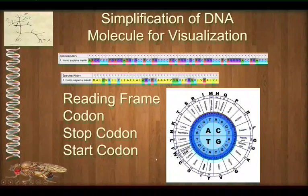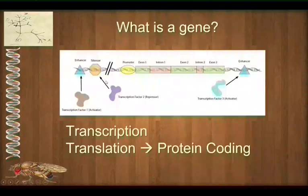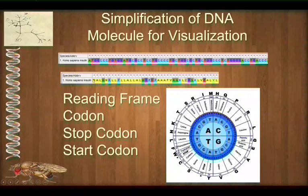A stop codon is one of three possible codons that let the molecules know that is the end of the gene. The start codon is ATG, or methionine. But also be aware — ATG can occur in the middle of a gene and just code for a methionine in the middle of a gene. There's one at the fifth position here in addition to the first position. So methionine can occur in places other than just at the start. That's how we visualize DNA.